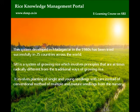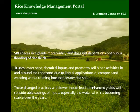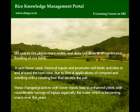It involves planting of single and young seedlings with care, instead of the conventional method of multiple and mature seedlings from the nursery. SRI spaces rice plants more widely and does not depend on continuous flooding of rice fields. It uses lesser seed, chemical inputs and promotes soil biotic activities in and around the root zone, due to liberal applications of compost and weeding with a rotating hoe that aerates the soil.